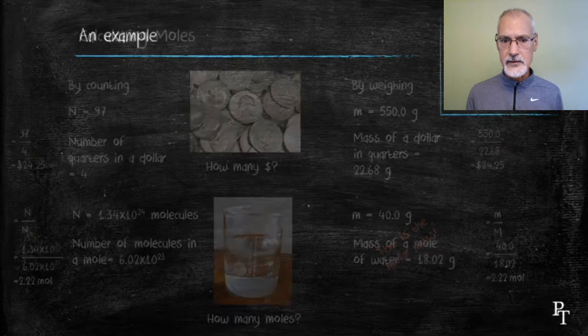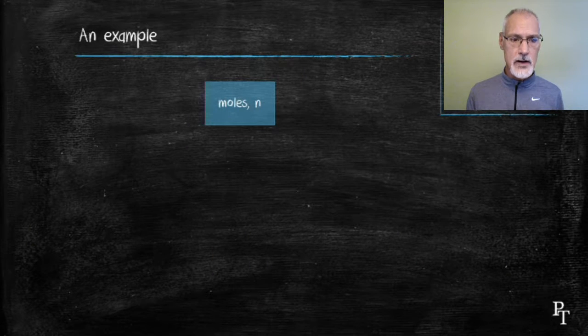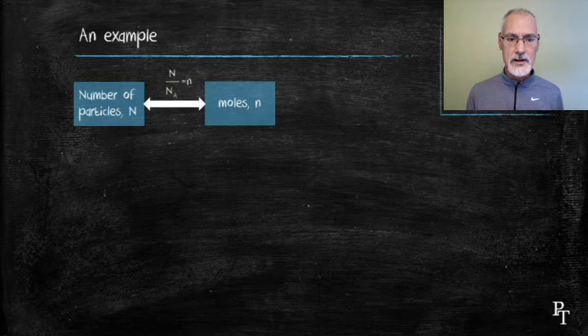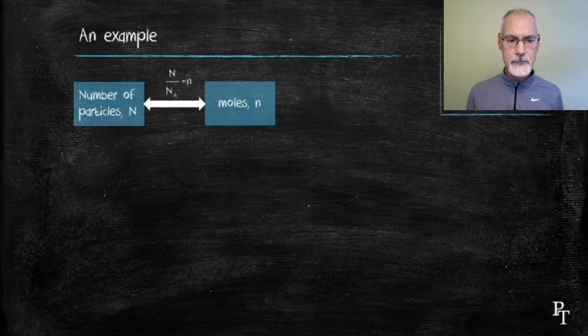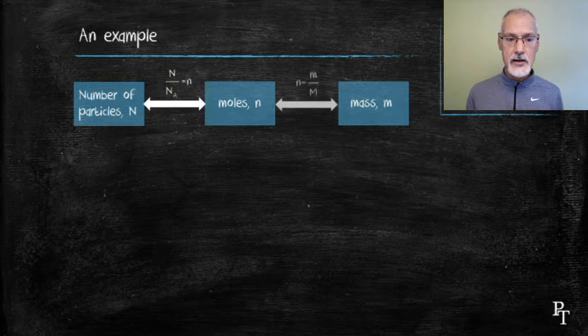I'm going to summarize that in this little diagram. So if one has moles and number of particles, one can convert back and forth between the two through the use of this relationship, where capital N stands for the number of particles, N subscript A is Avogadro's number, and n the number of moles. If I have the mass, I need knowledge of the molar mass, the mass of 1 mole, capital M. And I can also obtain the number of moles, small case n, by dividing the mass by the molar mass.